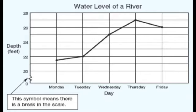In this graph, we've got the water level of a river. On the x-axis we've got the days of the week, and on the y-axis the depth of the river in feet. The water level increased from Monday through Thursday and then decreased on Friday. The graph was at its highest on Thursday, and the biggest increase is between Tuesday and Wednesday. Make sure you take time to write down some conclusions.